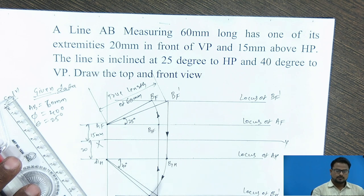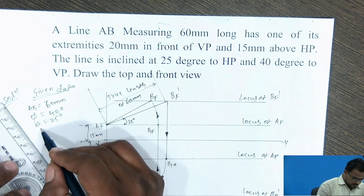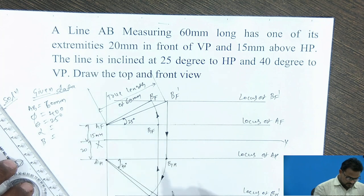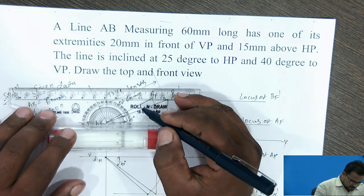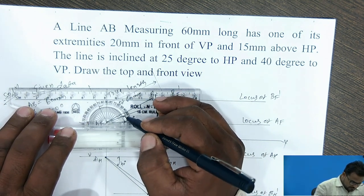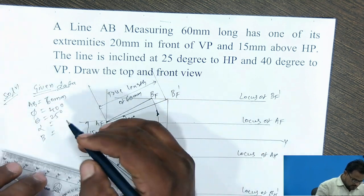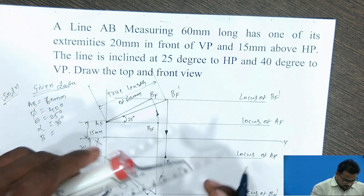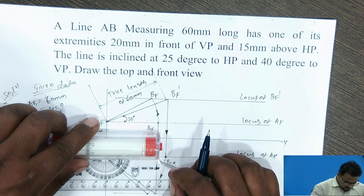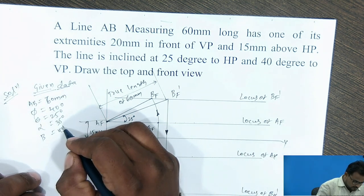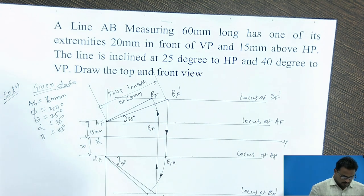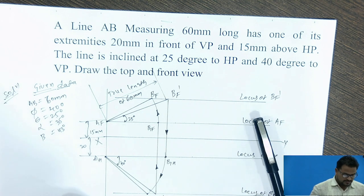I hope you have calculated alpha and beta. So the apparent angle alpha from the front view is approximately 35 degrees, and beta from the top view is approximately 43 degrees. This is how we draw the projections of a line with two different angles given and a line measuring 60 mm. Thank you.